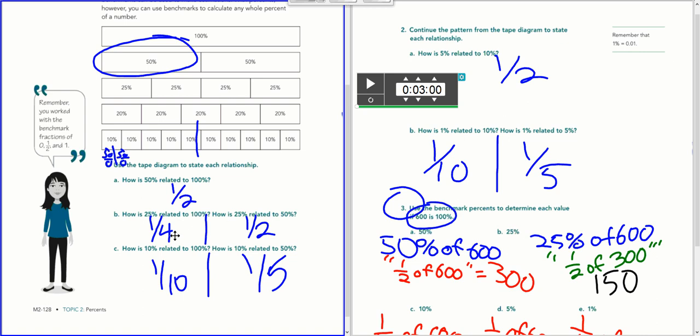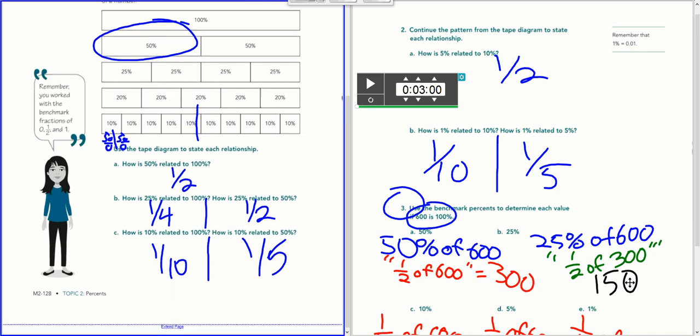25%, I could do one-fourth of 600, or I could say what's one-half of 300? Because remember, 25% is half of 50%. So take what 50% was, and then cut it in half, I get 150.